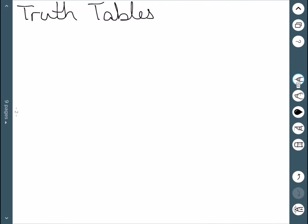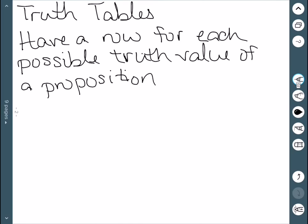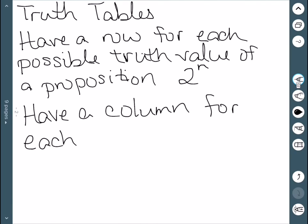So first we'll define a truth table. Truth tables have a row for each possible truth value of a proposition. In particular, depending on how many propositions are in your compound proposition, it'll have two to the n rows. It also has a column for each proposition being considered.